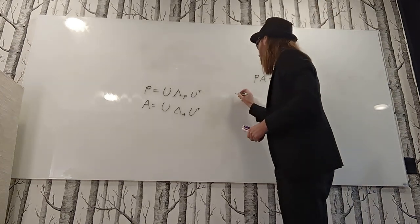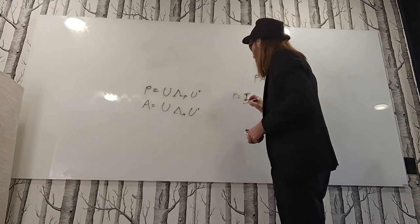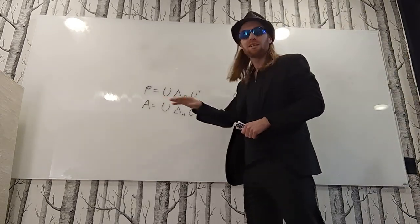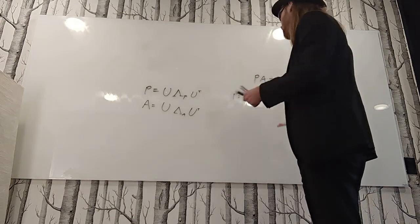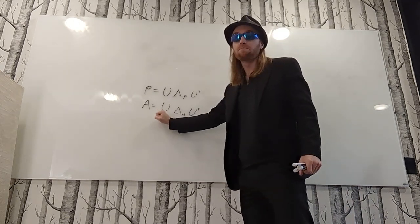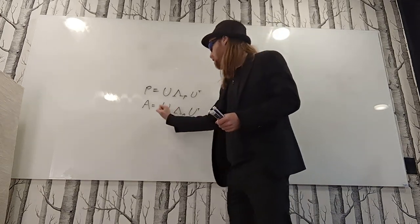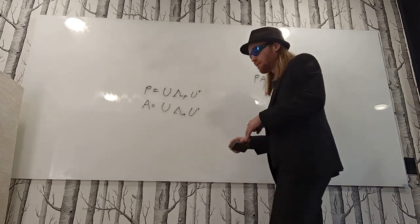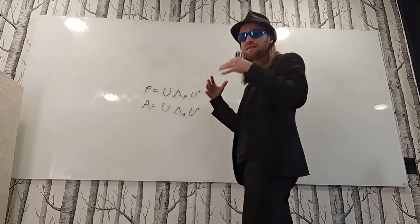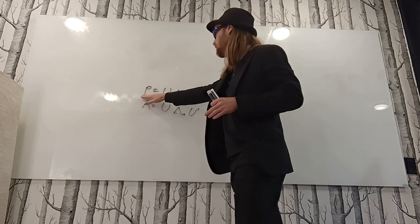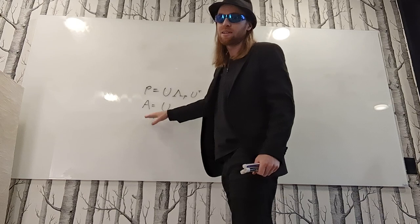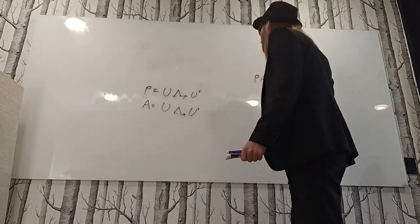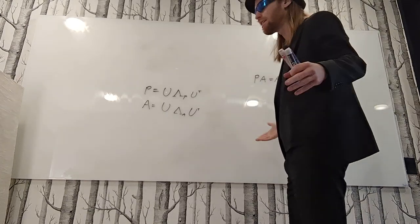A trivial example: take P to be the identity matrix. All eigenvalues are one and repeated, so any orthonormal basis is an eigenbasis. Most of those won't be eigenvectors for A, but the eigenvectors of A will also be eigenvectors of the identity. This is most useful when P has many distinct eigenvalues — that gives lots of information about eigenvectors of A. If P is the identity, you get no information at all, which makes sense since the identity commutes with everything.